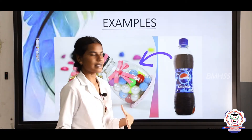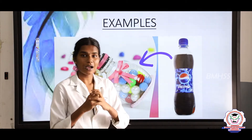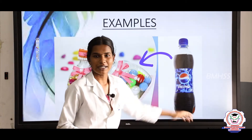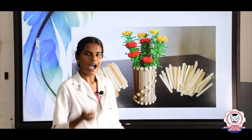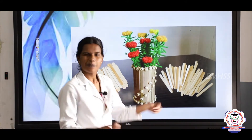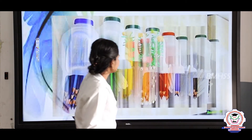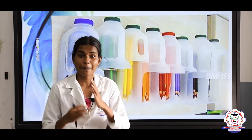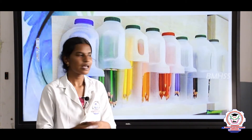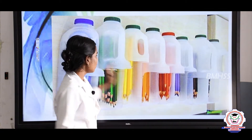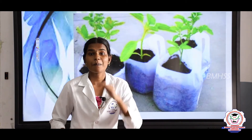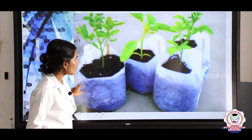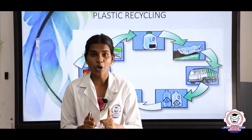Let us see some examples of recycling. We can make small tiny pots in plastic water bottles. Then, ice cream sticks — we can make a flower case using those ice sticks by sticking them together. We can make pencil boxes from water cans or kerosene cans to store pencils. We can also plant trees in plastic bags. We can make many useful things from plastic by the process of recycling.